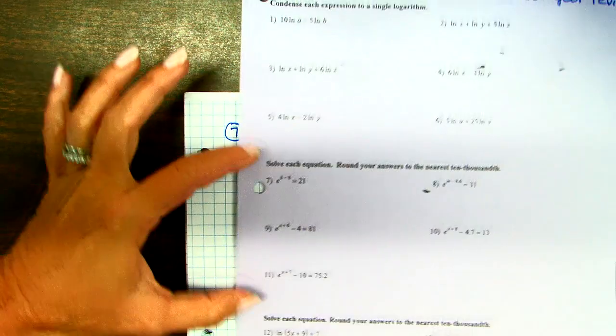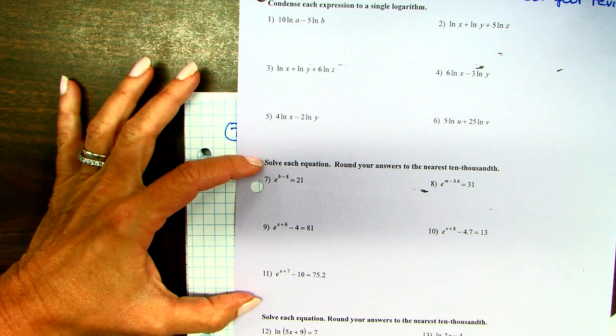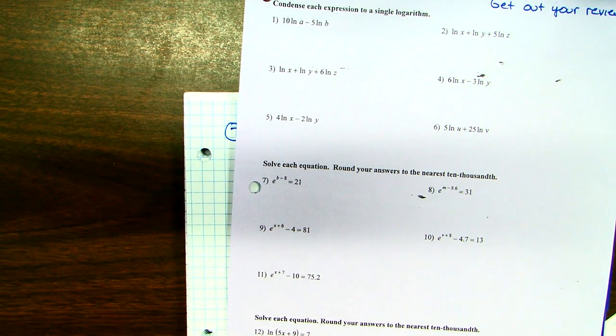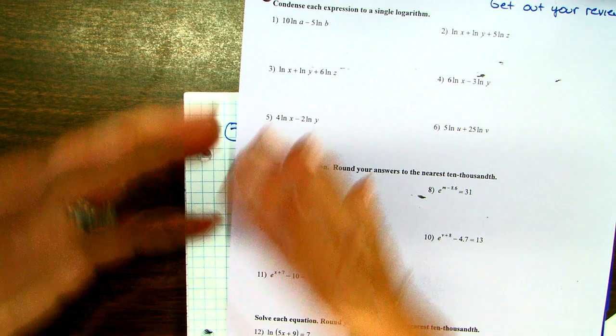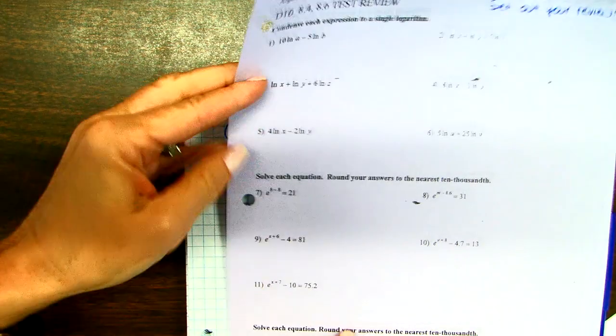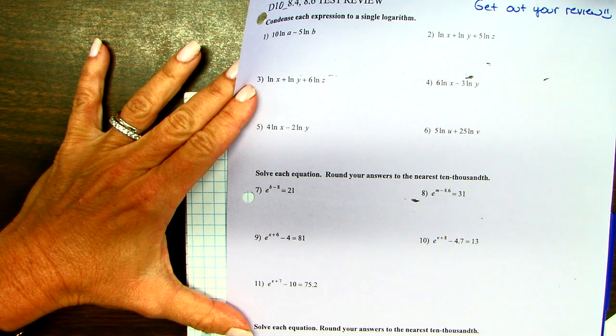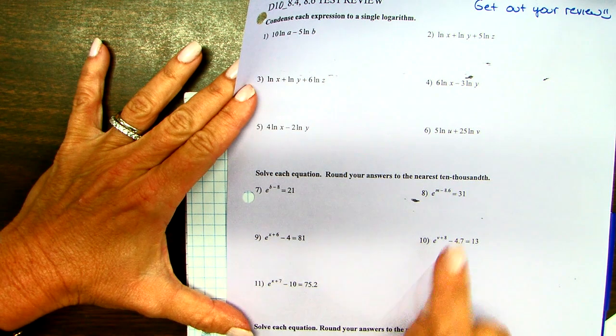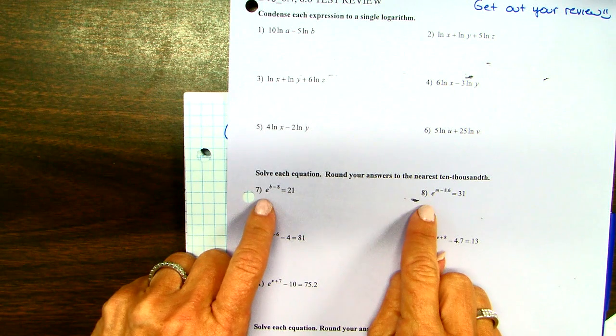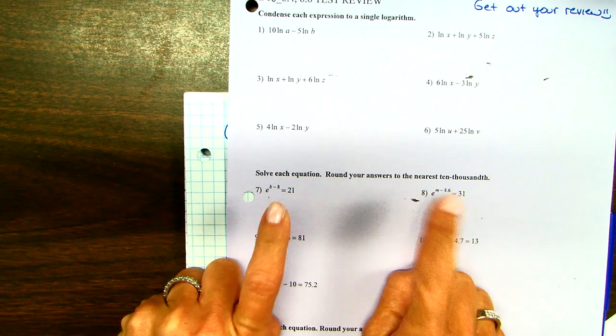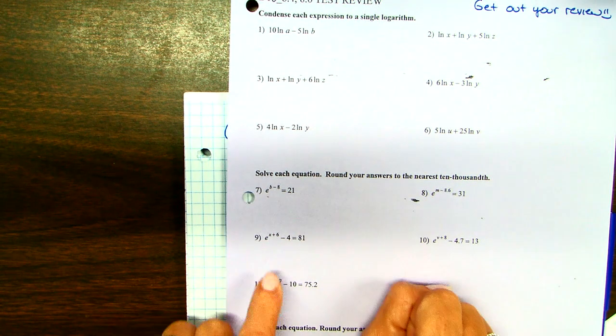So 7 through 11 are exponential functions. What an exponential function is, is a base with an exponent that has the variable. So the letter you're solving for, B, X, X, V, M, whatever the letter is, is in the power. That's a problem. We want it down on the ground so we can say X equals something as our final step. So anytime you have an exponential function, you first want to do what I called clean up the problem if it needs any cleanup. So let me explain. In 7 and 8, you have a base E to a power of blah, blah, blah. Who cares what it is? There's nothing else on the left-hand side of the equation. No cleanup necessary for either of those.